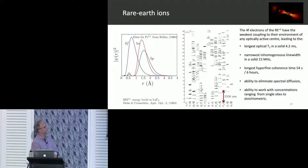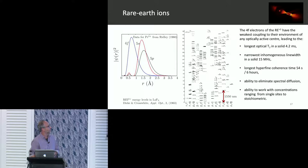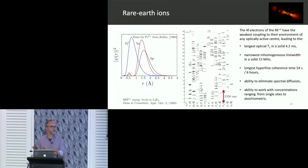We can get long hyperfine coherence times: doing a straight Hahn echo, we've got systems where we can get just under a minute. With dynamic decoupling at a reasonably leisurely rate we can push that out to 6 hours. There is virtually no spectral diffusion in these systems — a rare earth ion's frequency is hard and fast, very little change over time. And we can work with concentrations from single sites all the way through to stoichiometric.